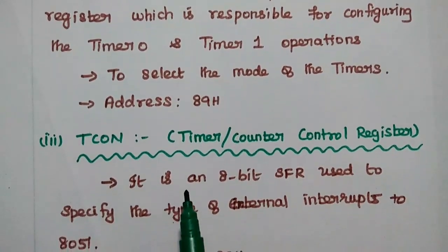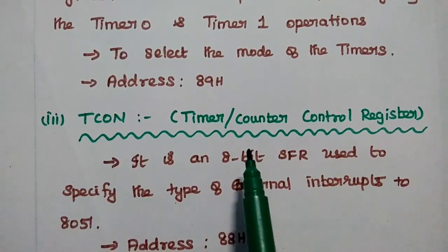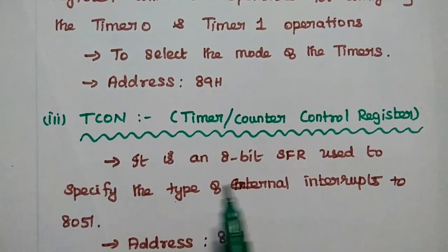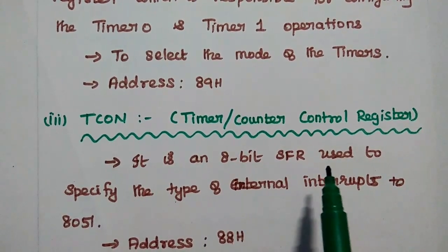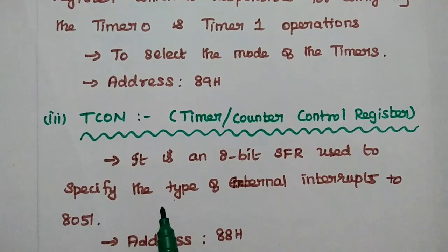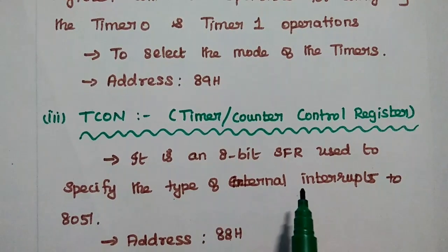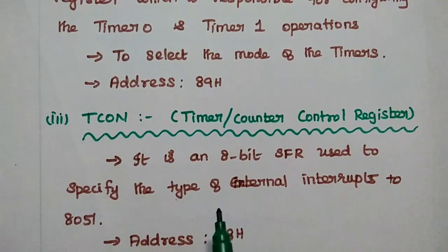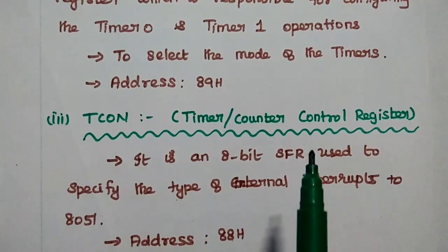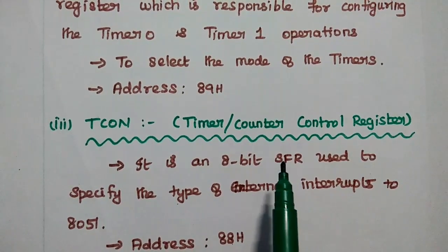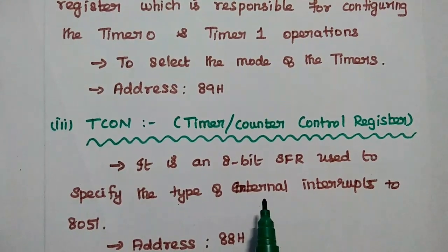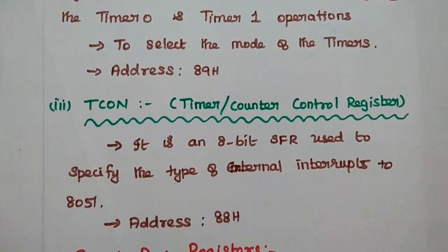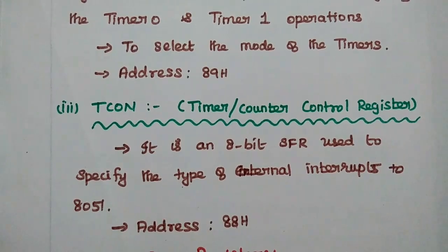The next one is the TCON register, that is the timer counter control register. It is an 8-bit special function register used to specify the type of external interrupts to the AT51 microcontroller. The control register is used to specify the external interrupts of this microcontroller. Its address is 88H.